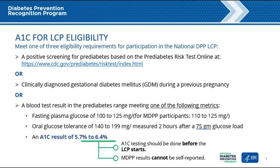We will now go into the specifics of using A1c to determine participant eligibility. Participants in the National DPP LCP must meet several requirements to be eligible for the program. All program participants must be 18 years of age or older, have a body mass index, BMI, of greater than or equal to 25 — greater than or equal to 23 if an Asian American person — and not be pregnant. Participants must then meet one of three eligibility requirements: either a positive screening for prediabetes, a previous diagnosis of gestational diabetes, or elevated blood glucose in the prediabetes range based on the results of one of three blood tests. These tests include a fasting plasma glucose test, an oral glucose tolerance test, or an A1c test.